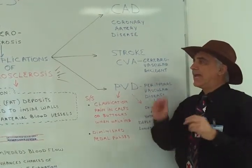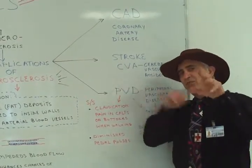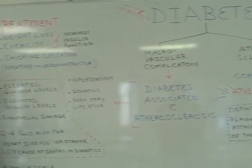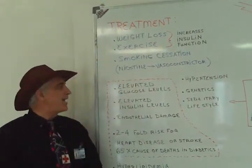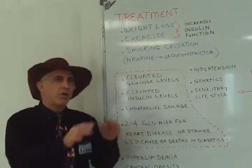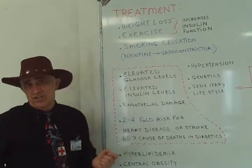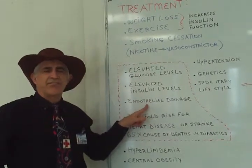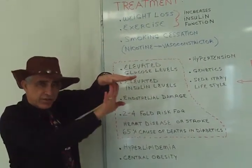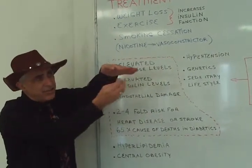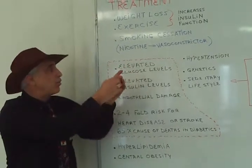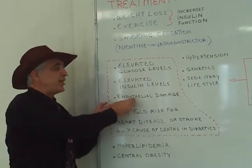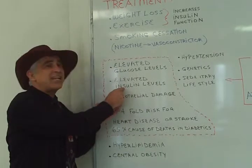Let's talk about atherosclerosis and what's unique in its relationship with diabetes. If the diabetic's sugar is not under control and they have consistently high blood sugar levels, the elevated blood sugar can wreak havoc on the endothelium of the blood vessel — the inner lining, which is very fragile. When that gets damaged, atherosclerosis can set in. Elevated blood glucose levels are a key trigger.